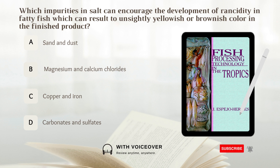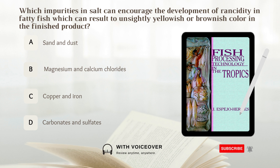Which impurities in salt can encourage the development of rancidity in fatty fish, resulting in an unsightly yellowish or brownish color in the finished product? A. Sand and dust. B. Magnesium and calcium chlorides. C. Copper and iron. D. Carbonates and sulfates.